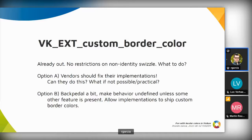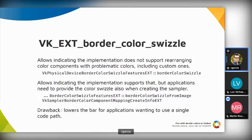Those implementations only had one way out — to stop supporting custom border colors. But that's also a loss for users, because if those implementations were in widespread use, users could no longer use custom border colors — and some of those implementations were in widespread use for exactly these use cases. The second option is backpedaling a bit and making behavior that was previously defined now undefined unless some other feature is present, and designing a mechanism that would allow custom border colors to be used with non-identity swizzles, at least in some implementations.